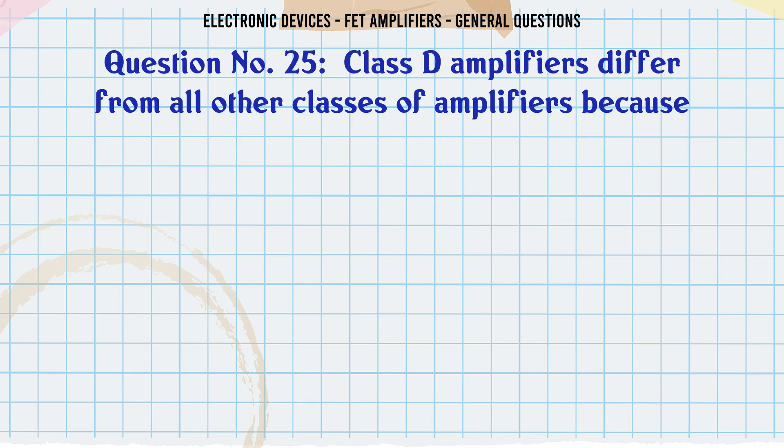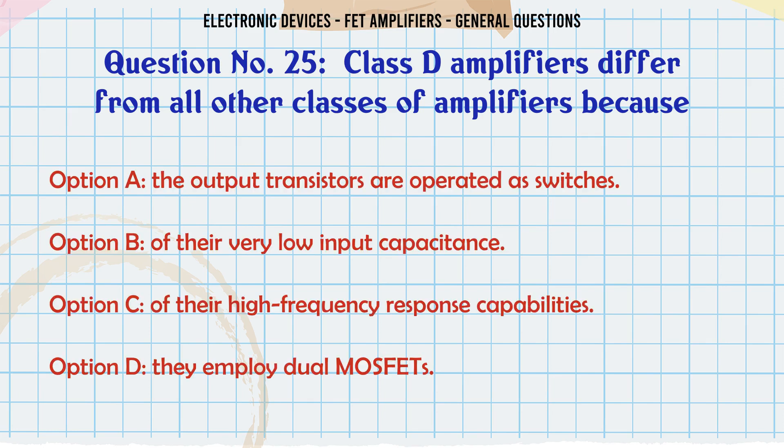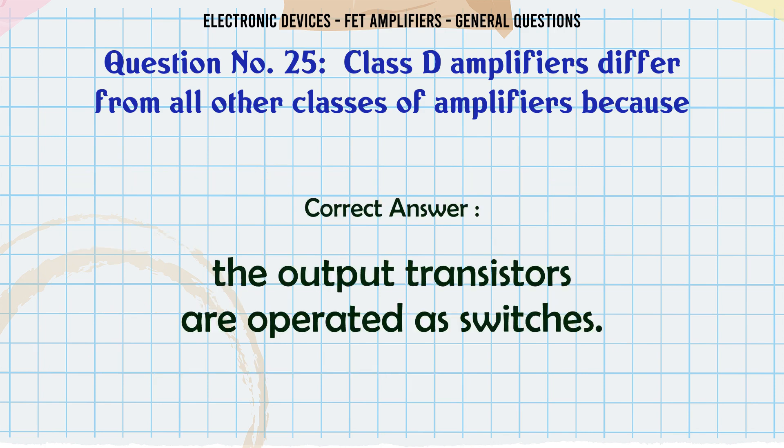Class D amplifiers differ from all other classes of amplifiers because: A. The output transistors are operated as switches. B. Of their very low input capacitance. C. Of their high frequency response capabilities. D. They employ dual MOSFETs. The correct answer is: the output transistors are operated as switches.